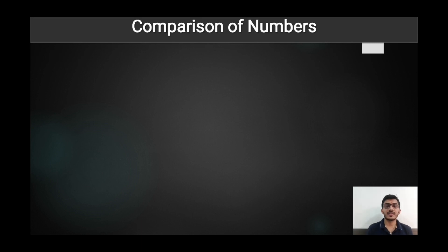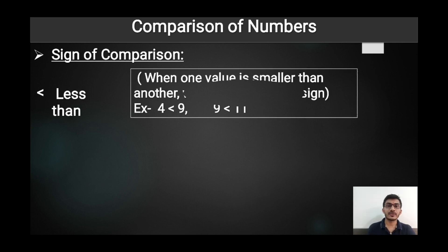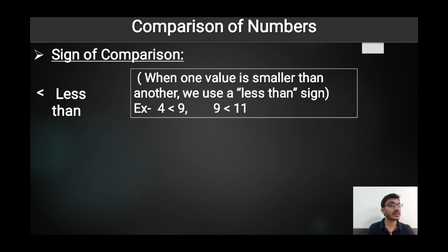The first topic is comparison of numbers. Before starting comparison, you should understand some signs of comparison. The first sign is 'less than' — when one value is smaller or lesser than another number, we write this sign between the two numbers. For example, four and nine: four is smaller than nine, so we put the less than sign between four and nine.